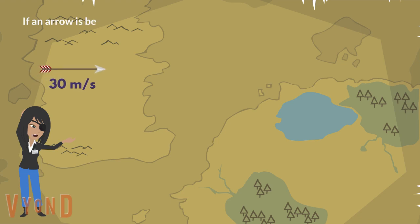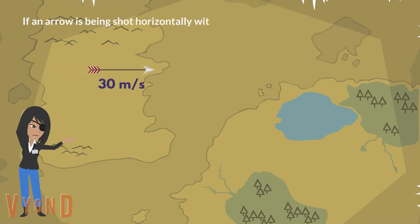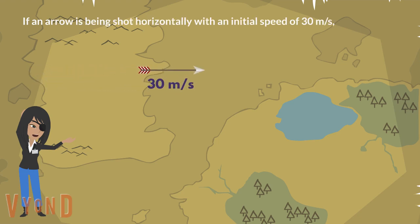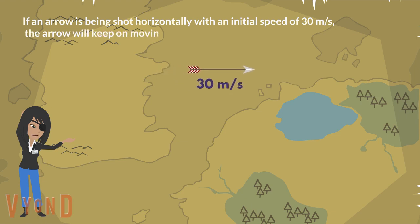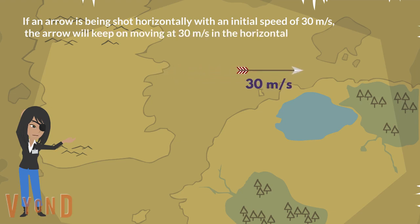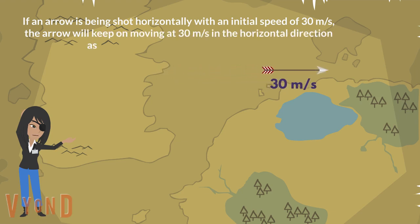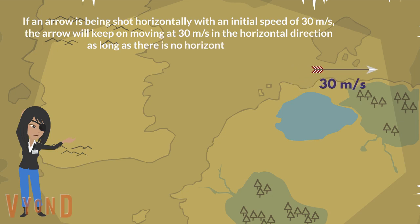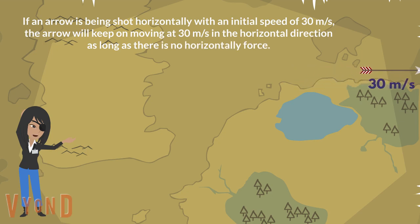If an arrow is being shot horizontally with an initial speed of 30 meters per second, the arrow will keep on moving at 30 meters per second in the horizontal direction, as long as there is no horizontal force.